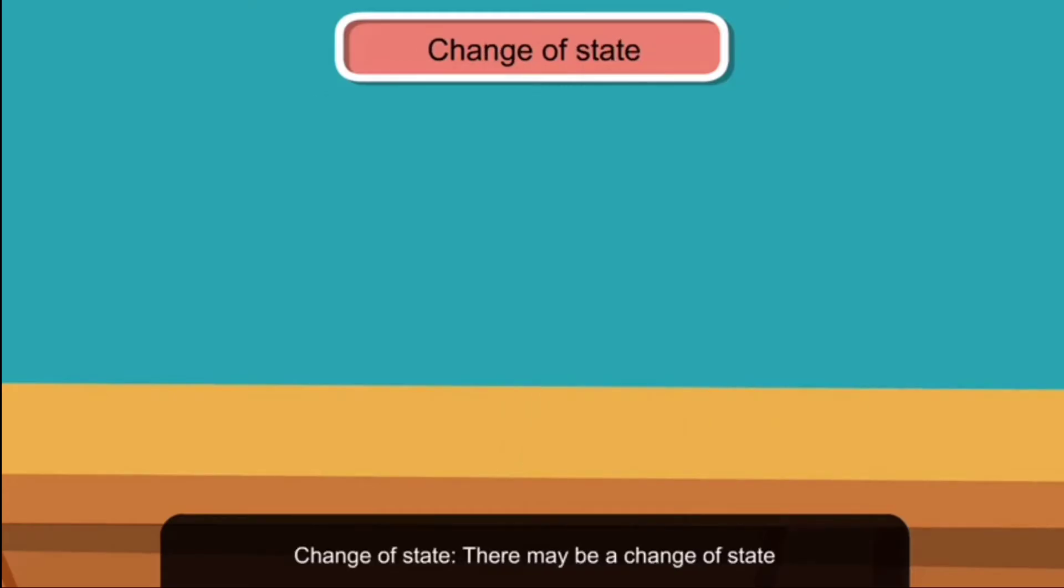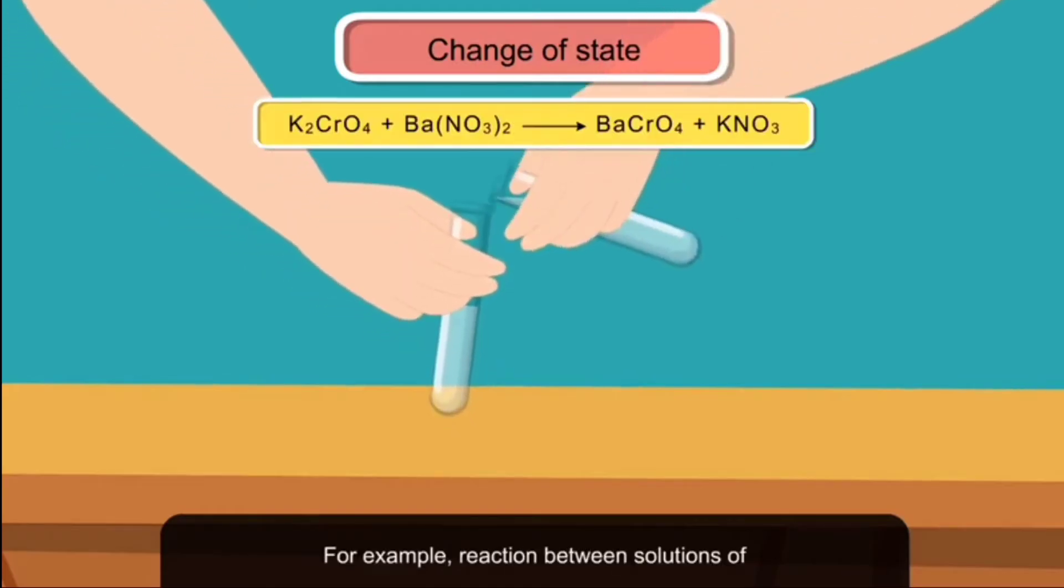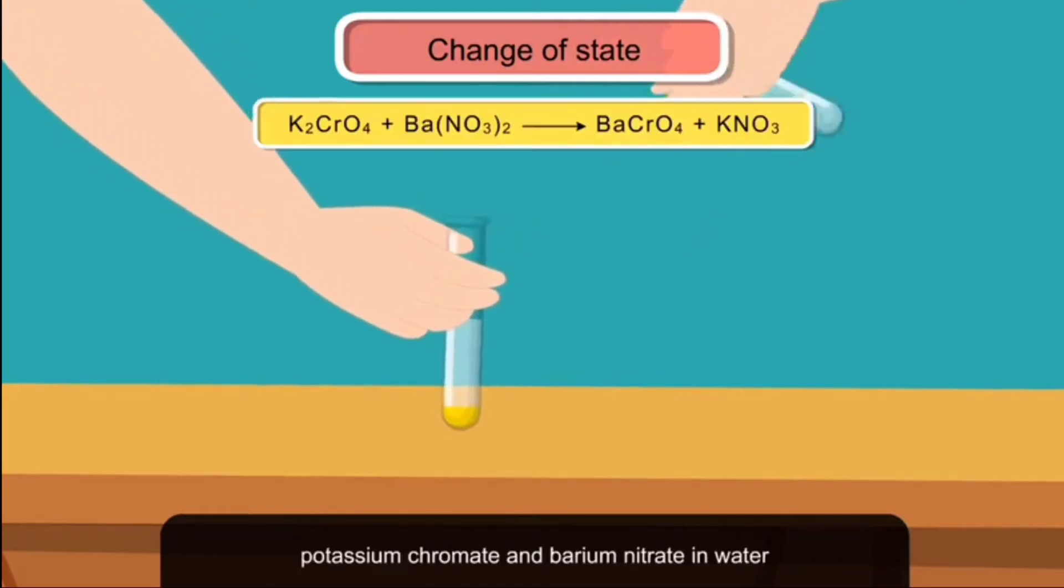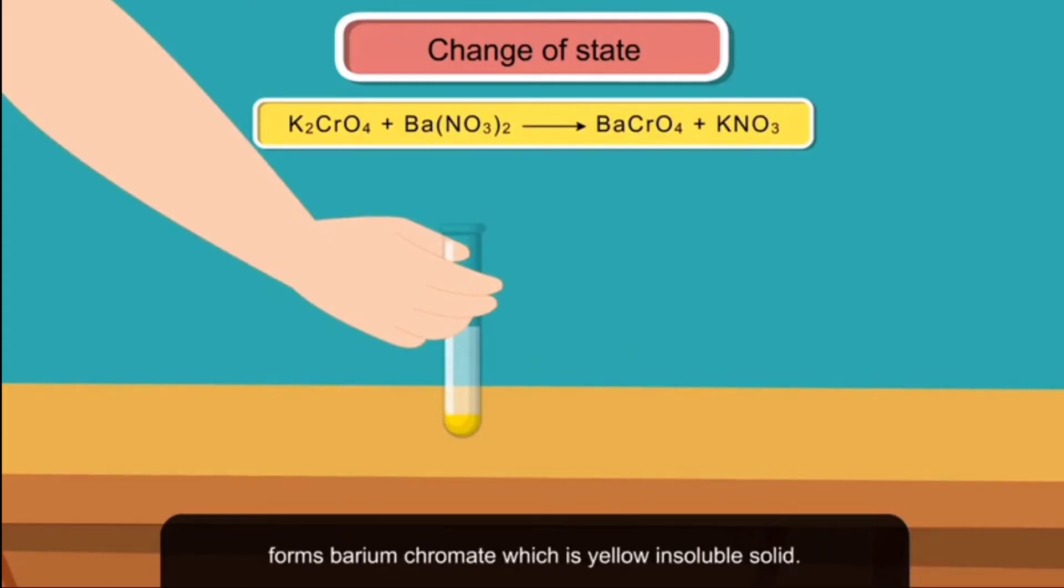For example, reaction between solutions of potassium chromate and barium nitrate in water forms barium chromate, which is yellow insoluble solid.